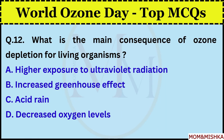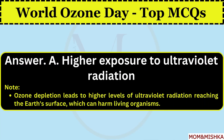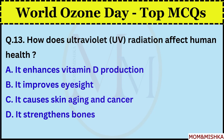What is the main consequence of ozone depletion for living organisms? Higher exposure to ultraviolet radiation. Option A. Ozone depletion leads to higher levels of ultraviolet radiation reaching the Earth's surface, which can harm living organisms.